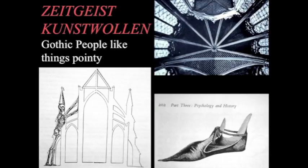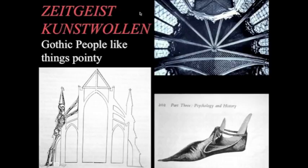Zeitgeist — does anybody know this word? Zeitgeist means 'Zeit' meaning time and 'Geist' meaning spirit or ghost — the spirit of the times. There was an idea that during any given historical period there are certain collectively held values and aspirations that can't necessarily be tied to single individuals — they just well up and can't be stopped. A subset of Zeitgeist is Kunstwollen. 'Kunst' is art, 'Wollen' is to want — so Kunstwollen is the will to art, or the will of art to find its form.